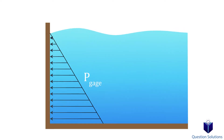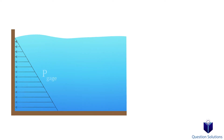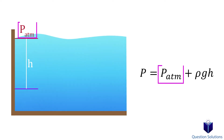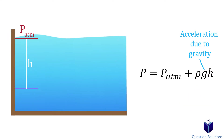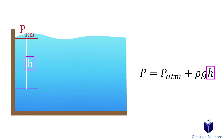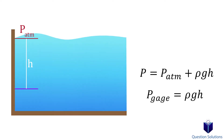Pressure changes with depth — the deeper we go, the higher the pressure, and vice versa. To find the pressure a certain distance below the ocean's surface, we use an equation where the first term is the atmospheric pressure at the free surface, rho is the density of the substance (here, seawater), g is the acceleration due to gravity (9.81 m/s² or 32.2 ft/s²), and h is the depth below the free surface. If we use a gauge, our equation simplifies accordingly.